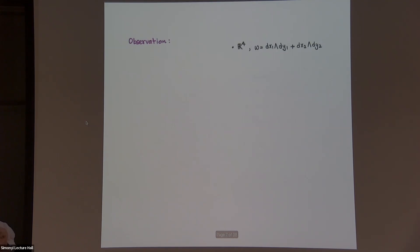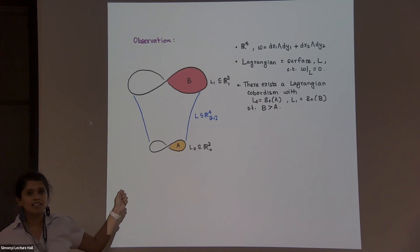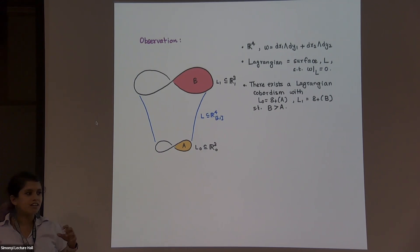So look at R4. We saw R4 in the last slide. But now look at this two form on it. Those are standard coordinates, paired off. This is a two form. I like that form. And what is a Lagrangian? It's a surface, it could have boundary, so that this form vanishes on it. Cool.